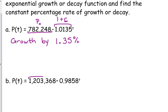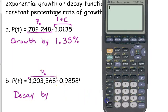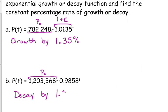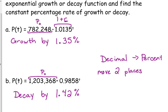Similarly, example B, that 1,203,368 is our initial population. This is decay because that base is less than one. So this one, I'm going to rely on my calculator a little bit more. I'm going to do one minus that number, 0.9858, and I'm going to convert that to a percent, 1.42%. The other one is growth by 1.35%. Converting decimal to percent, some of you probably need to write this down. Decimal to percent, move two places to the right. Percent to decimal, move two places to the left.